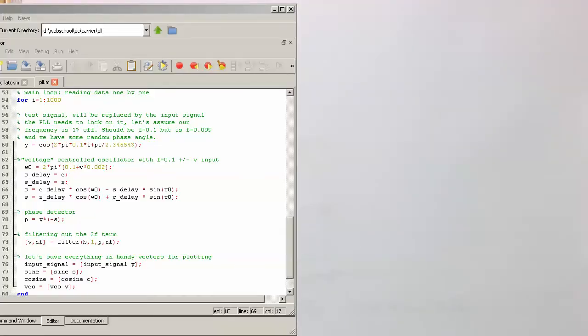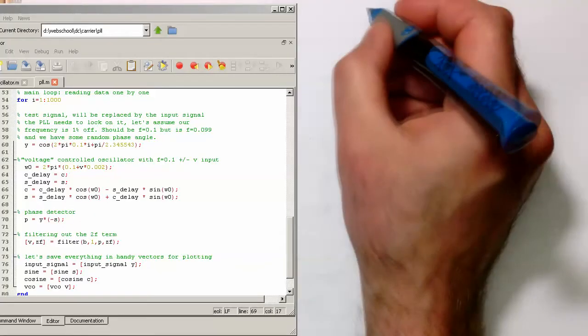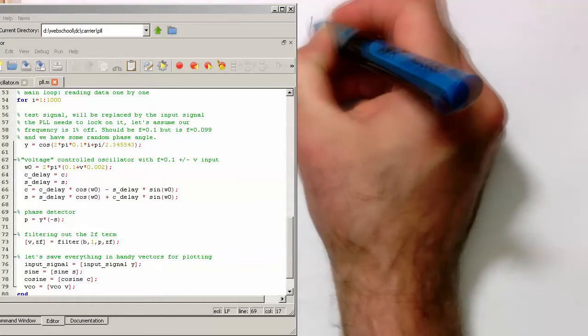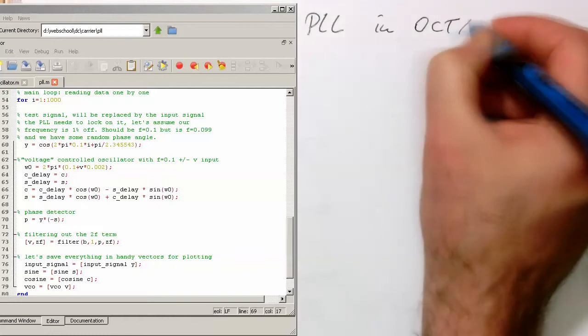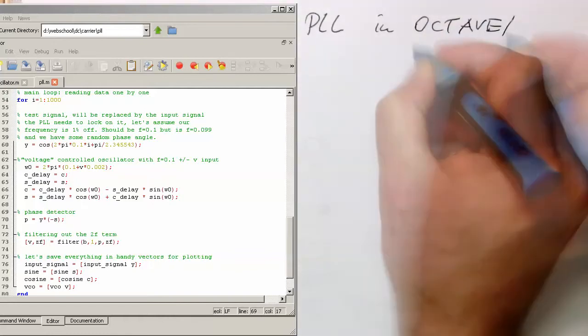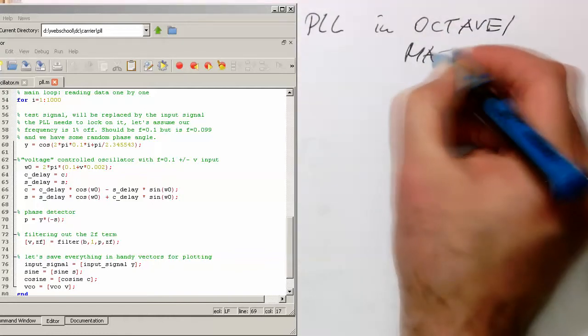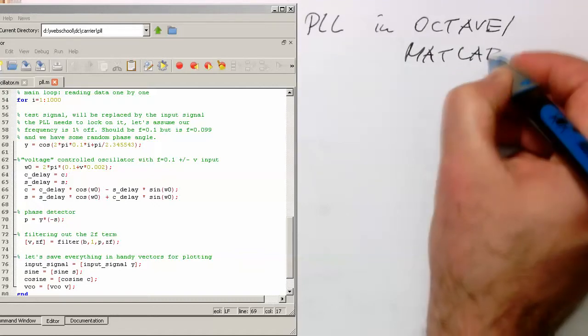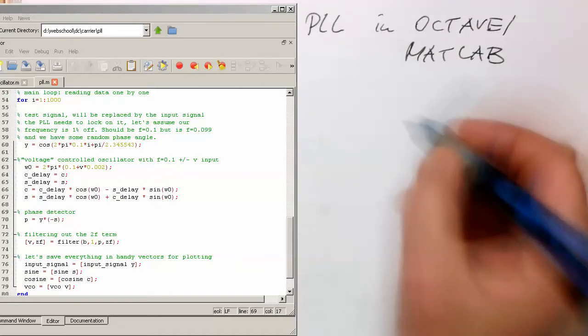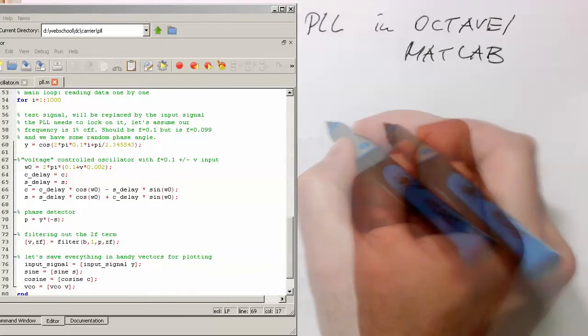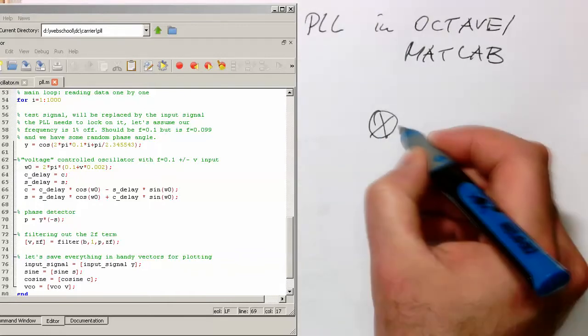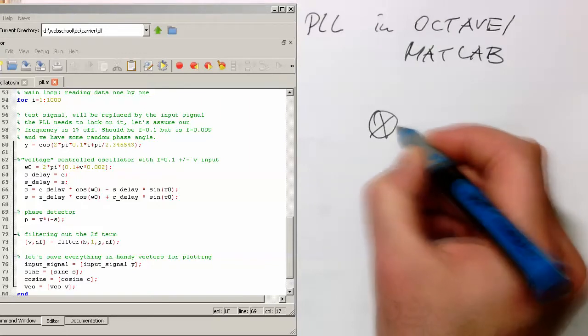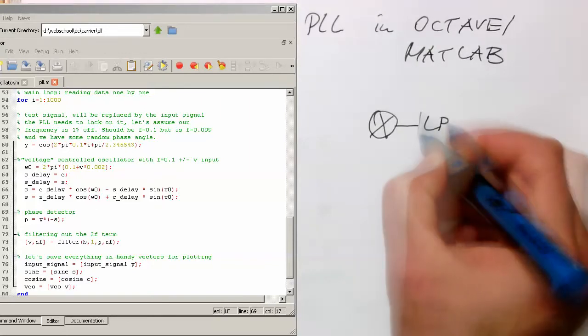So let's now look at our PLL in Octave or MATLAB and do this here split screen that we have the circuit diagram here on the one side and the code on the other because now it's getting too complicated to code here in real time.